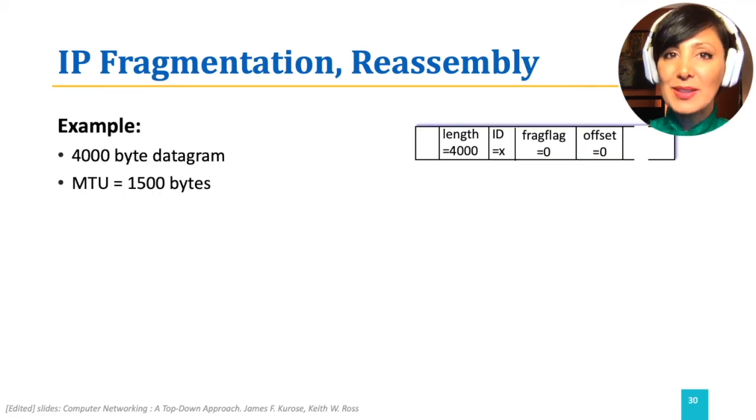For example, if we have a datagram of size 4,000 bytes and the MTU is 1,500 bytes, the datagram will be divided into three smaller datagrams fitting within the MTU.